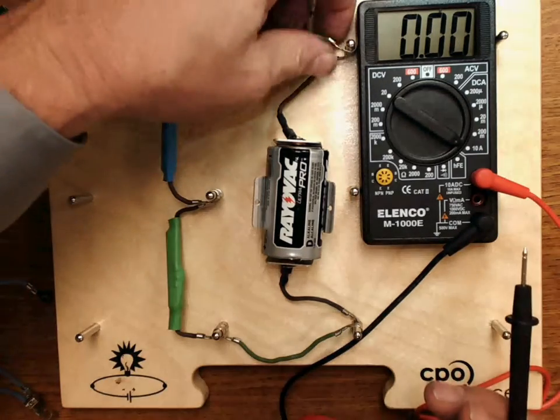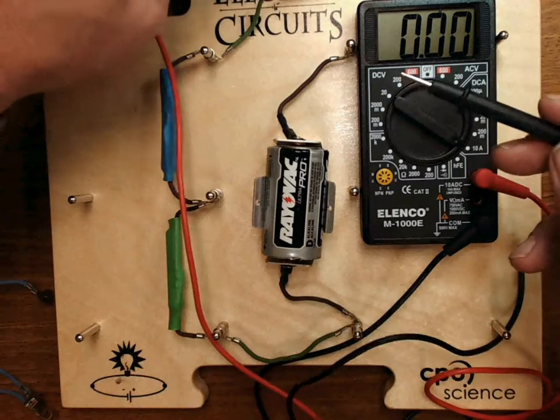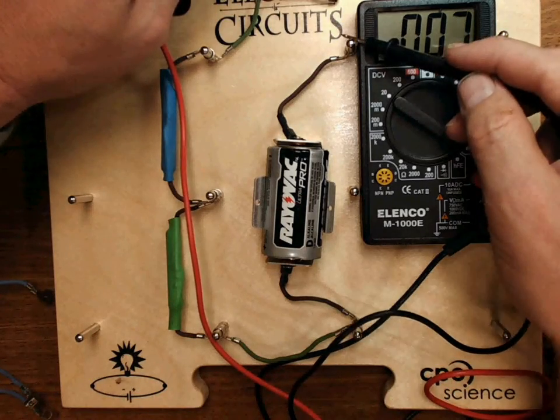That's how we measure the current. So, all of these get me 0.7.